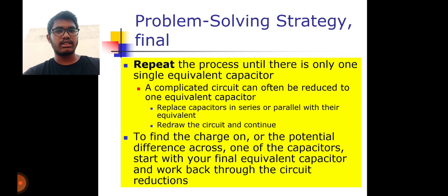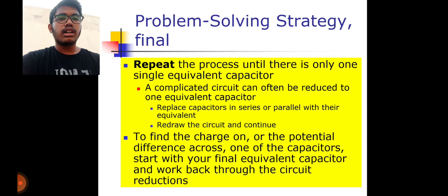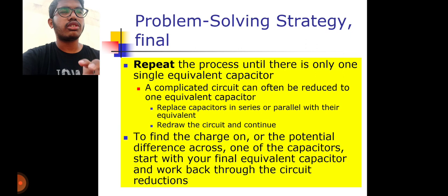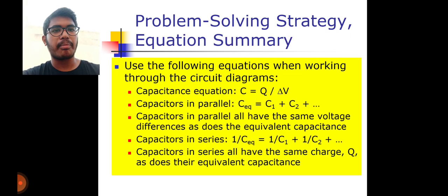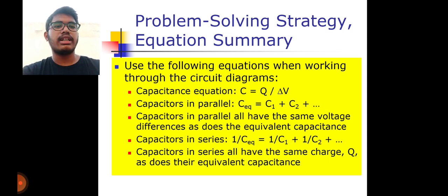The strategy to find charge and potential difference across one of the capacitors: start with your final equivalent capacitor and work back through the circuit. Use the following equations — capacitor equation: C equals Q divided by delta V, which is the most important formula. In parallel: C equivalent equals C1 plus C2 plus C3. Capacitors in parallel always have the same voltage as the equivalent capacitor.